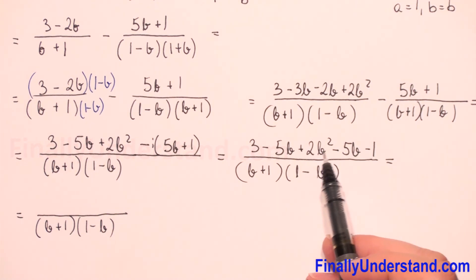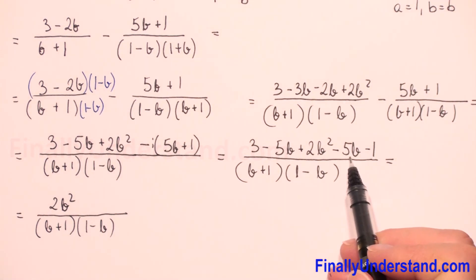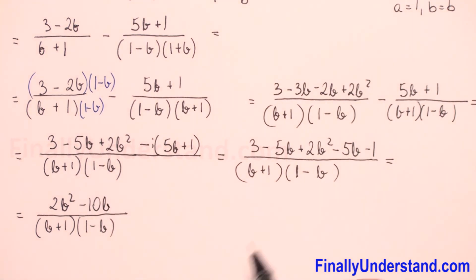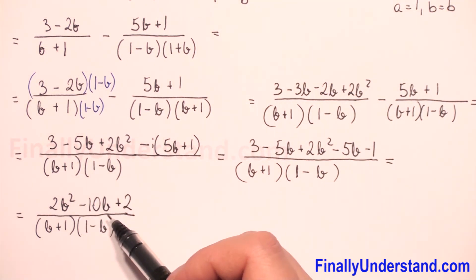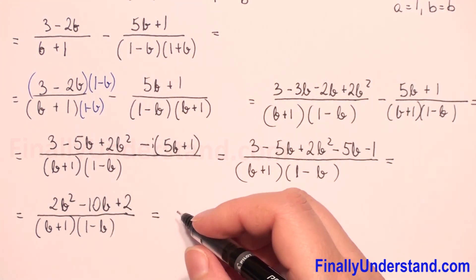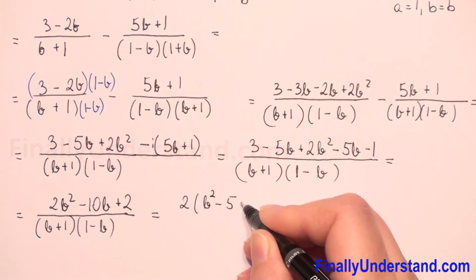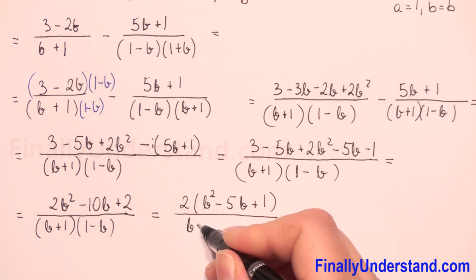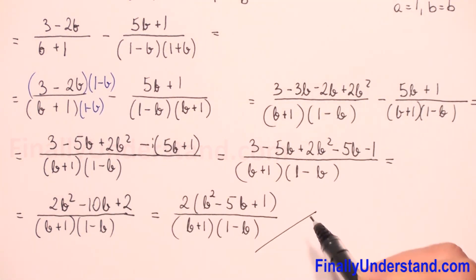Now combining like terms: 2b squared, then negative 5b minus 5b gives negative 10b, and 3 minus 1 gives 2. So the numerator is 2b squared minus 10b plus 2, over b plus 1 times 1 minus b. We can factor 2 from the numerator to get 2 times b squared minus 5b plus 1, over b plus 1 times 1 minus b. This is the final solution.